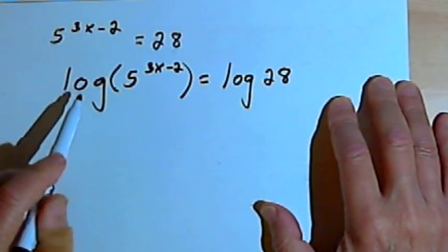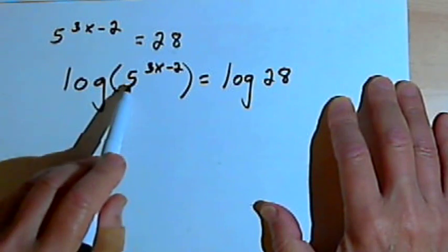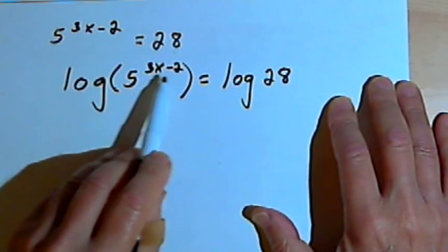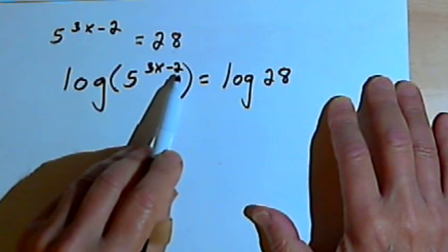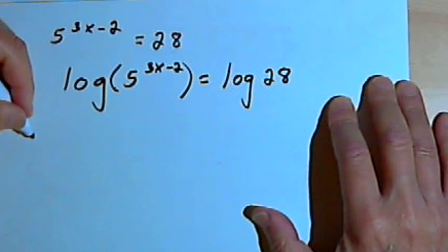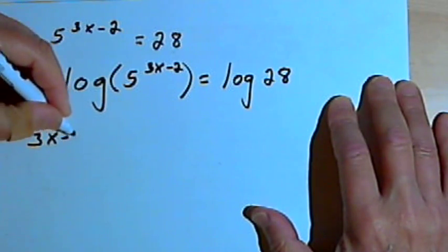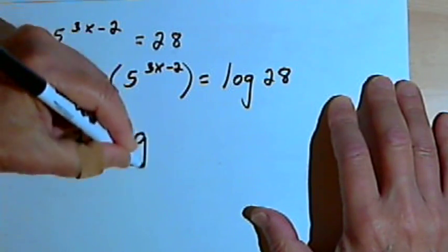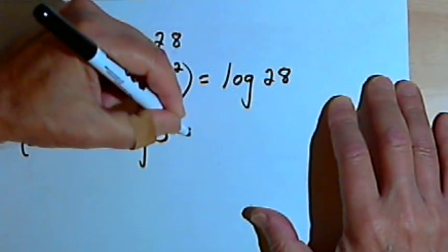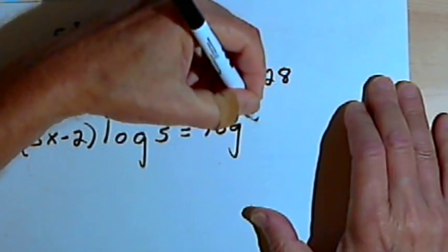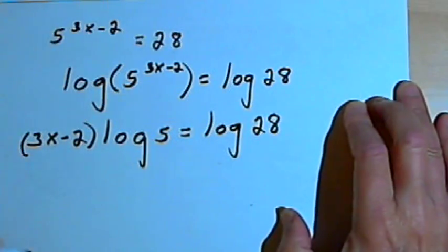Now I've got a rule that says when I take a log of a number that's raised to a power, I can take that power and make it the coefficient of the logarithm. So I'm going to take the 3x minus 2 and make that a coefficient, giving me (3x minus 2) times the log of 5 equals the log of 28.